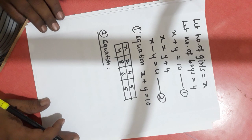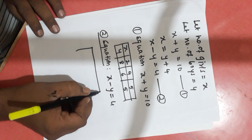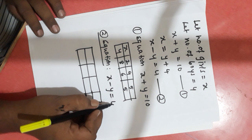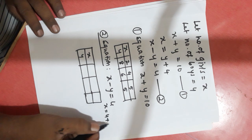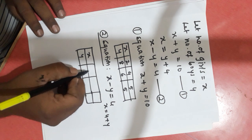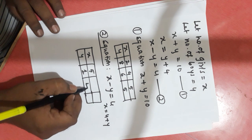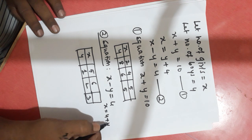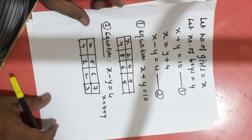For the second equation, X minus Y is equal to 4, we get X is equal to 4 plus Y. If Y is equal to 1, X is equal to 5. If Y is equal to 2, X is equal to 6. If Y is equal to 3, X is equal to 7. Select simple integer values — you can take zero also.